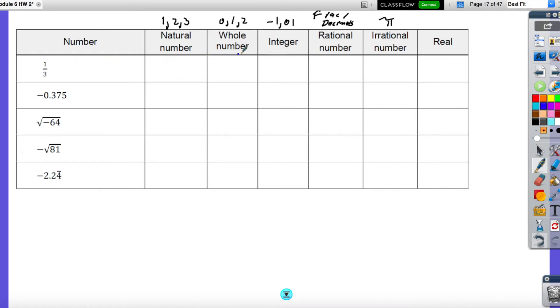So let's go ahead and look at this. 1/3, that is a fraction. So since it's a fraction, I start with the rational number. And since it's a rational number, it is also a real number. Negative 0.375, that is also a decimal that ends. So that is also a rational number and a real number.